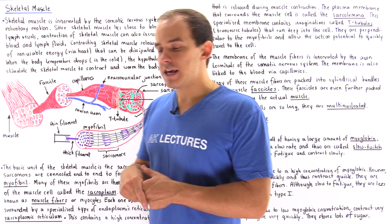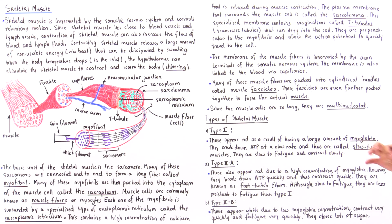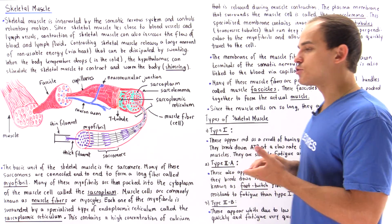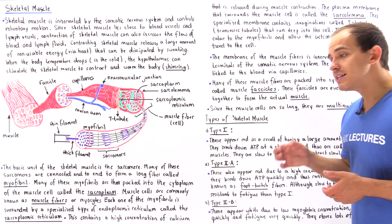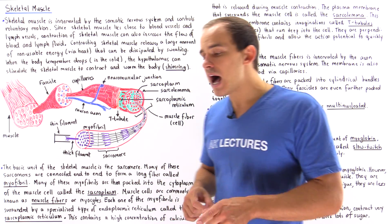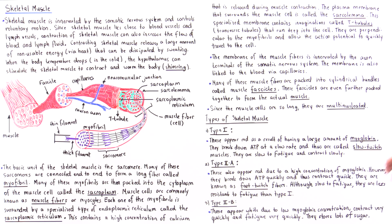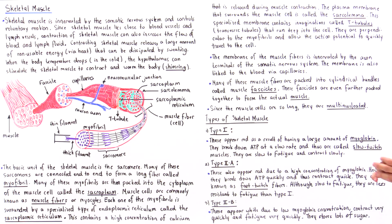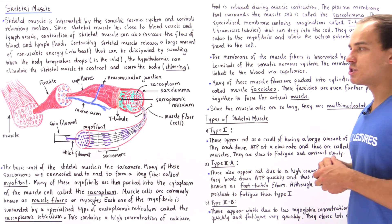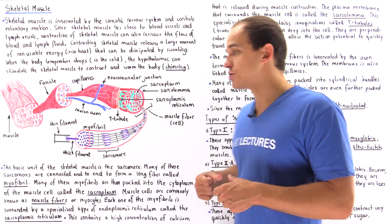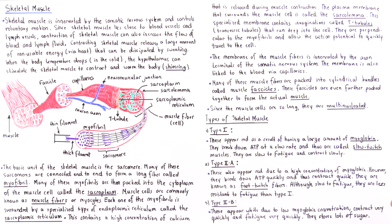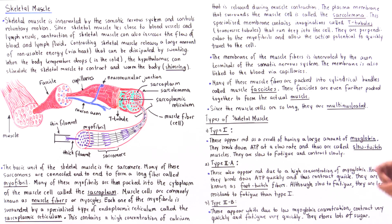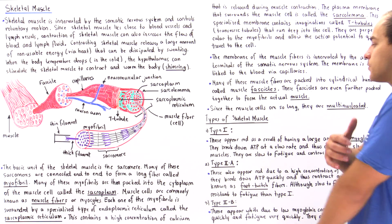Type 2b muscles appear white because they contain a relatively low concentration of myoglobin. They break down ATP quickly but also fatigue very quickly. They contain a very high concentration of glycogen — stored glucose — inside our muscles. In summary: type 1 skeletal muscles are found in the postural muscles and give us our posture; type 2a are usually found within our legs; and type 2b are usually found within our arms and upper arms.